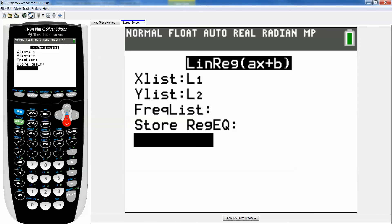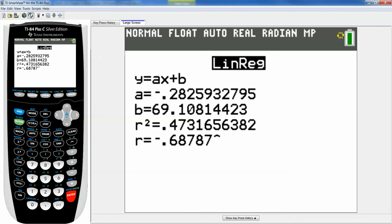And we don't need the intermediate things. The frequency list and store regression equation we're just not going to worry about. We're just going to go down to calculate and press enter. Now this should look familiar because this is how we calculated R in section 4.1. There's the R which is negative 0.688.